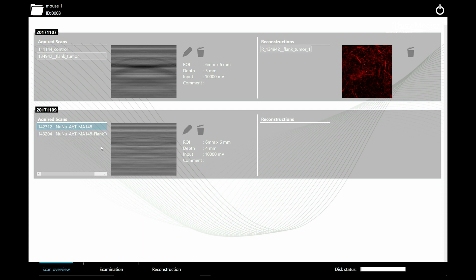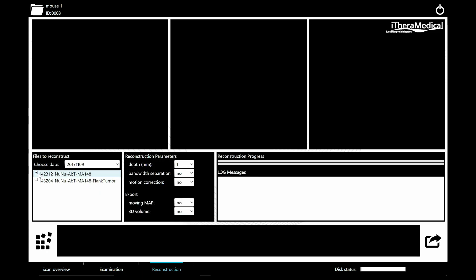By clicking on a selected preview image, the Reconstruction tab is opened. The Reconstruction tab allows the selection of files to be reconstructed, as well as the selection of the imaging depth.